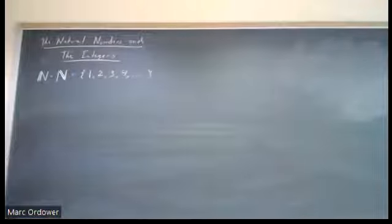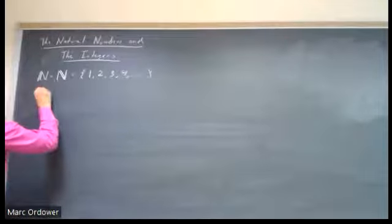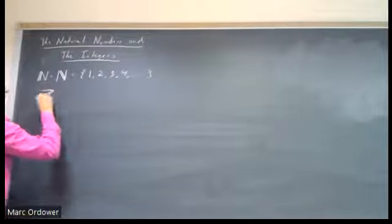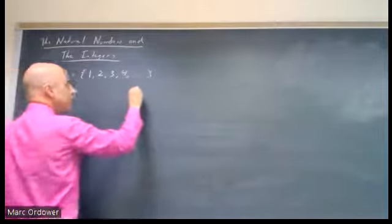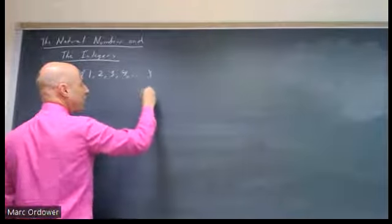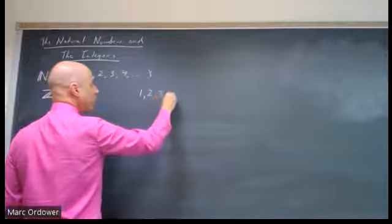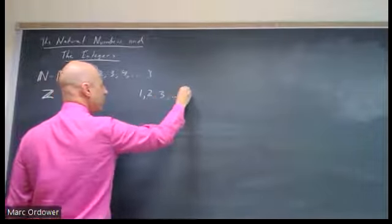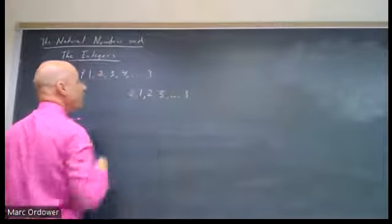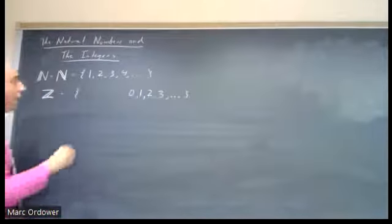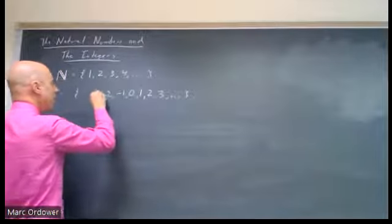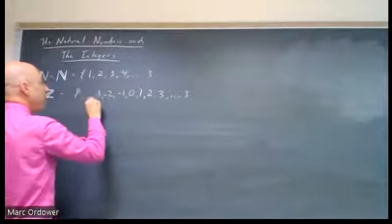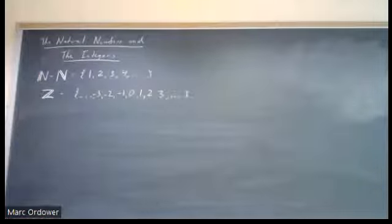So those are the natural numbers. The integers have all the natural numbers in them. So one is also an integer, two is also an integer, three is also an integer, four, five, six, and so on. But so is the number zero, and so is the number negative one, and negative two, and negative three, and forever in this direction as well as the other direction.